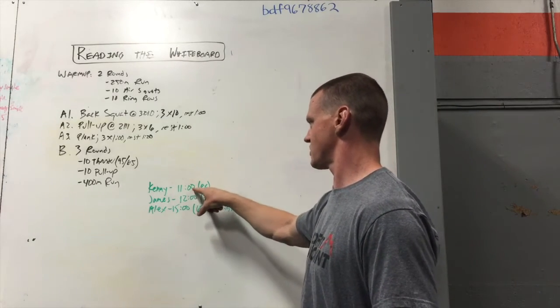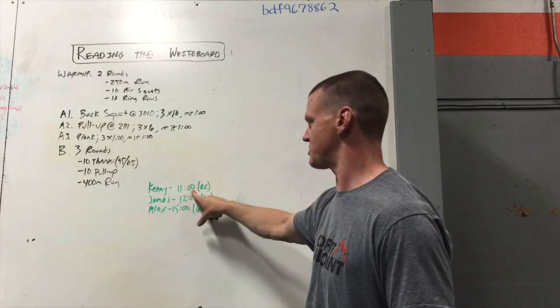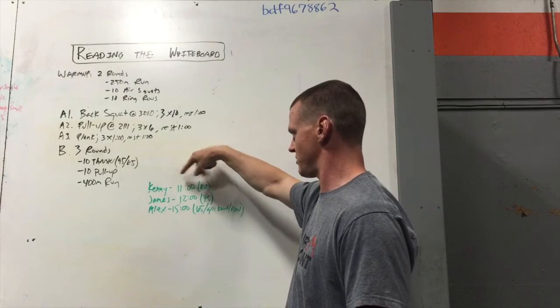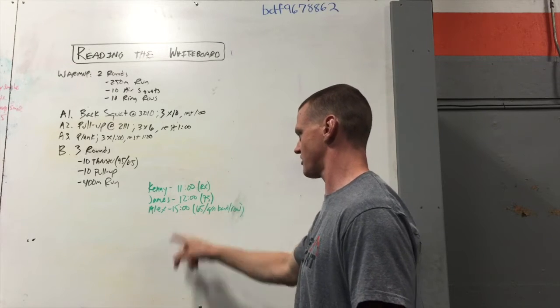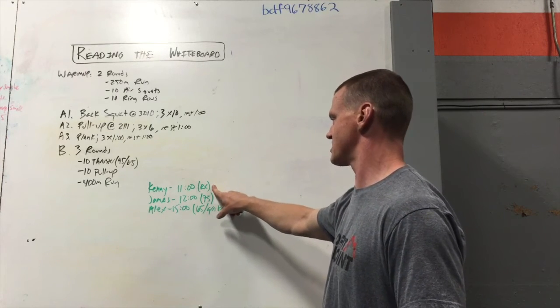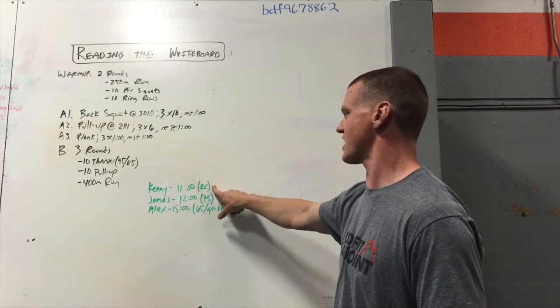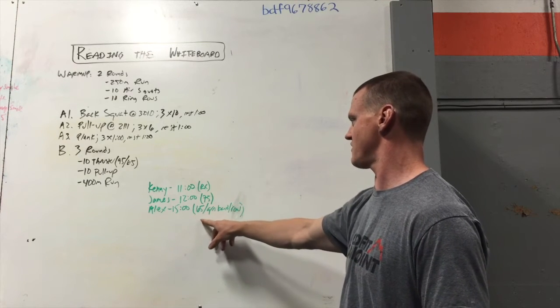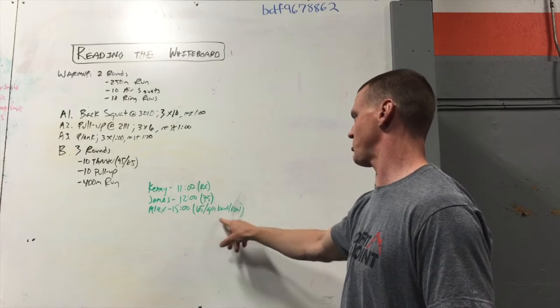And that means that's how long it took these people to finish this workout. So Kenny took 11 minutes, James took 12 minutes, and Alex took 15 minutes. And then next to their times, there is a notation. So Kenny's got an RX notation, James has 75, Alex has 65, green band and row.